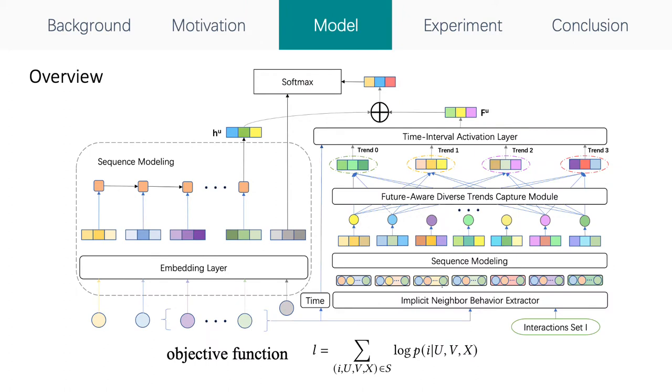Here is an overview and objective function of our framework. The left part of FAT illustrates the network of our base model. The base model takes user historical behaviors as inputs and outputs user preference representation vectors for prediction decoder. The right part of FAT consists of an implicit neighbor behavior extractor, a sequence modeling module same as the left part which outputs relative future preference. A diverse chance capture layer and a time-aware attention layer is then used to compute the final future preference for the user.